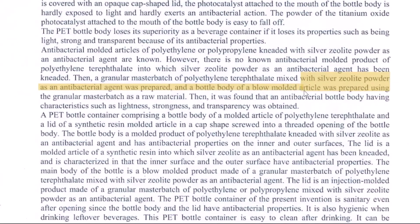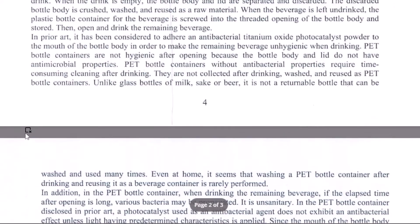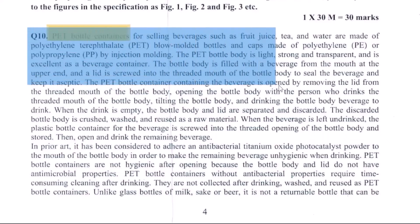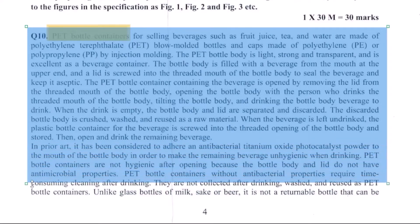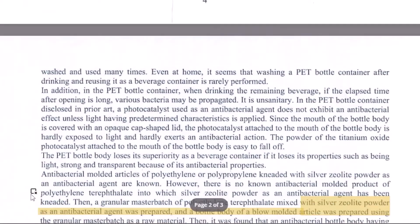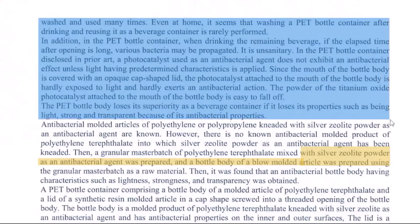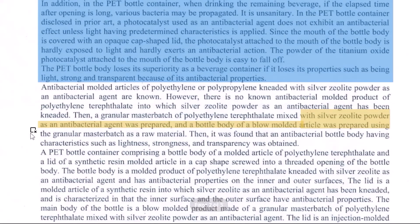Moving on to the background section — what do we put in the background? In the first few paragraphs, they seem to be talking about what PET bottles are, what their usage is, and what happens to them in general usage. They further talk about relevant prior art and the problem statements. Finally, they note that the bottle loses its superiority as a beverage container if it loses its properties — covering all the pain points to create a case for our invention.